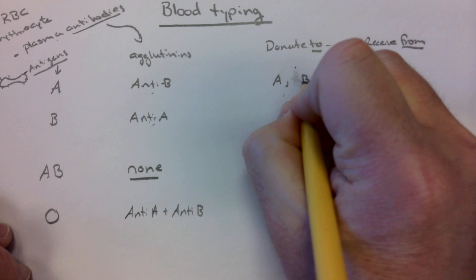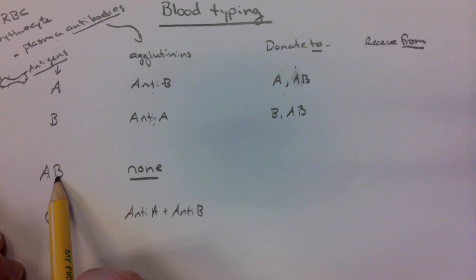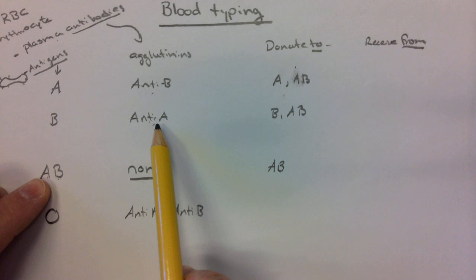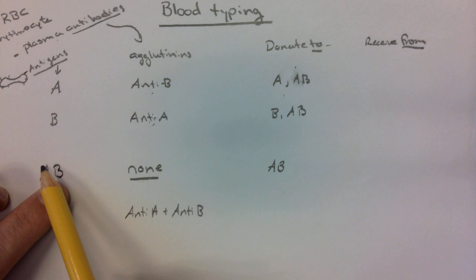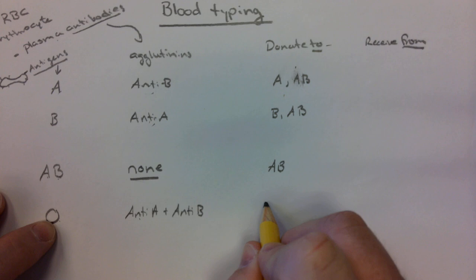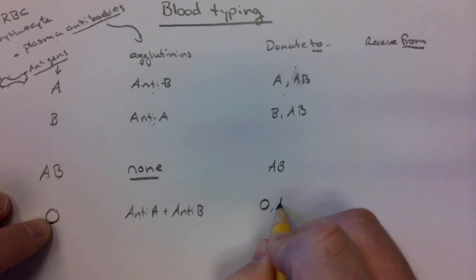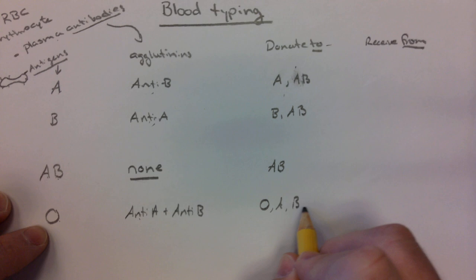B can donate to B blood, of course, and it can also donate to AB. AB blood can donate to AB, but it cannot donate to A because of the anti-B, it cannot donate to B blood because of the anti-A, and it cannot donate to O because O has both anti-A and anti-B. So AB can only donate to AB blood. O can be donated to O, of course, but since O doesn't have any antigens, there's nothing to react with anti-B, so O can donate to A blood. There's no anti-A, so it can donate to B blood, and it can donate to AB blood as well.